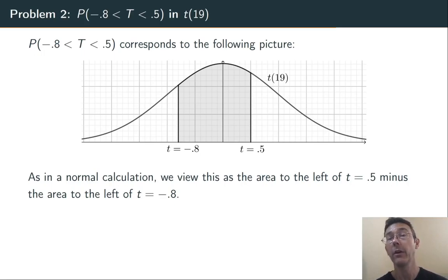In this case, the area we're interested in is not a full tail to the left of one value. So our strategy is simple. We're going to get the area to the left of t equals 0.5, and then subtract the area to the left of negative 0.8. So we need to do two PT commands with a subtraction in between.